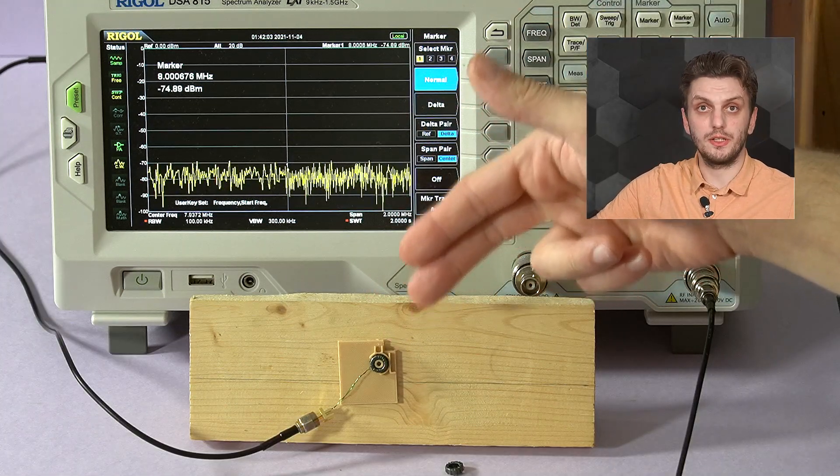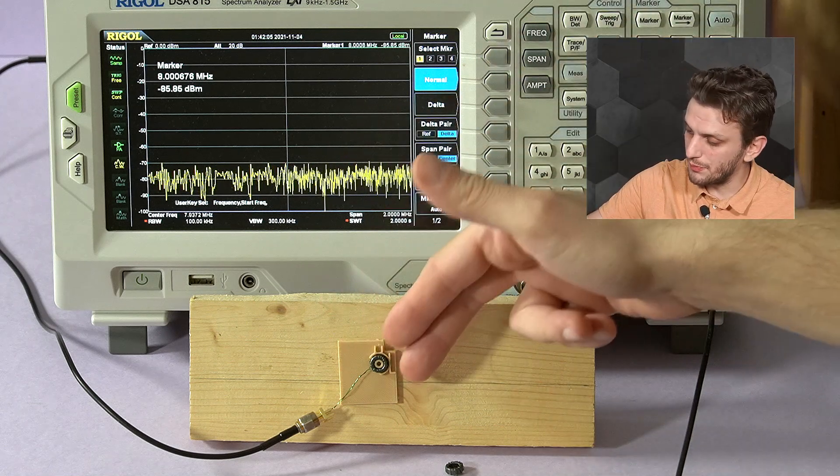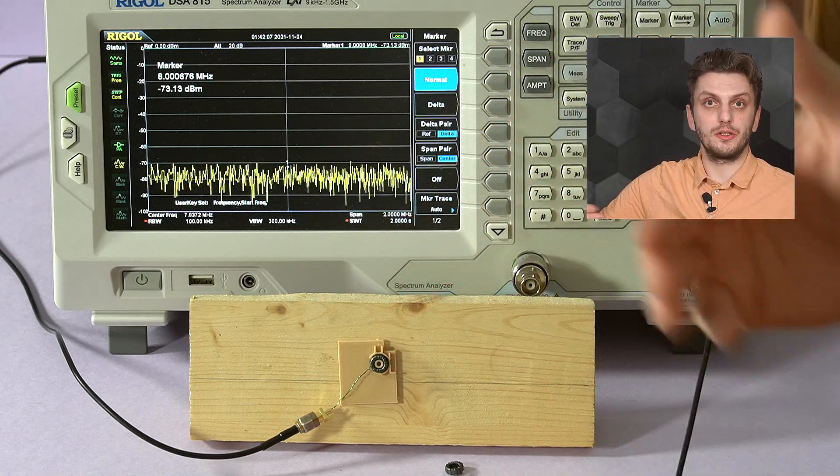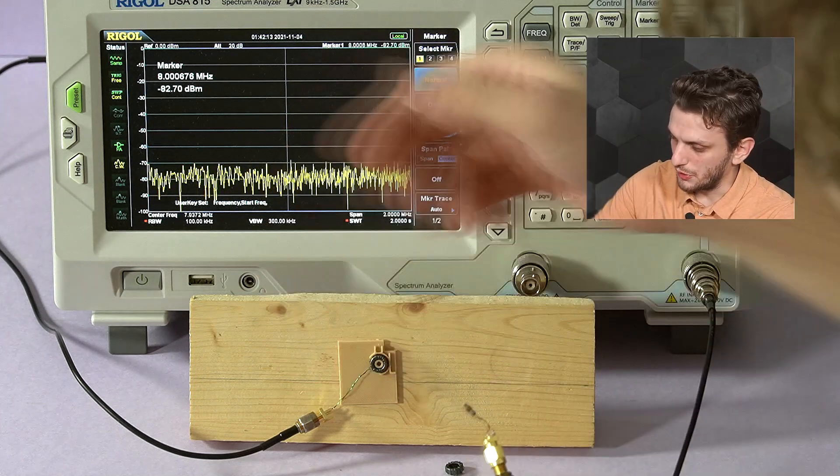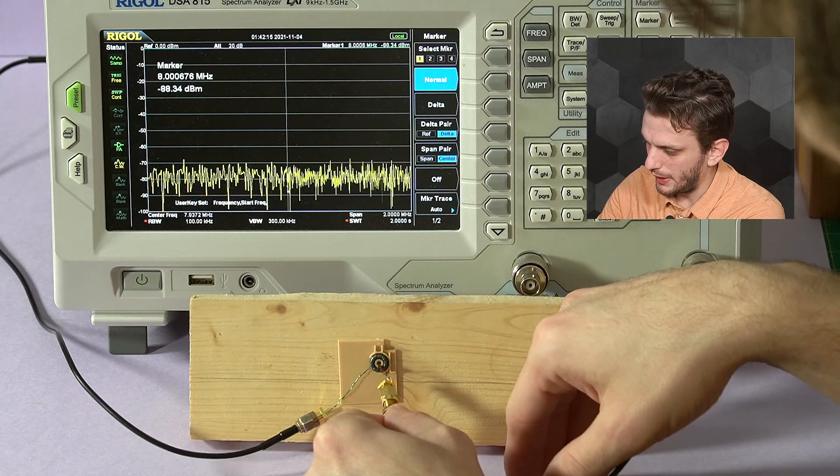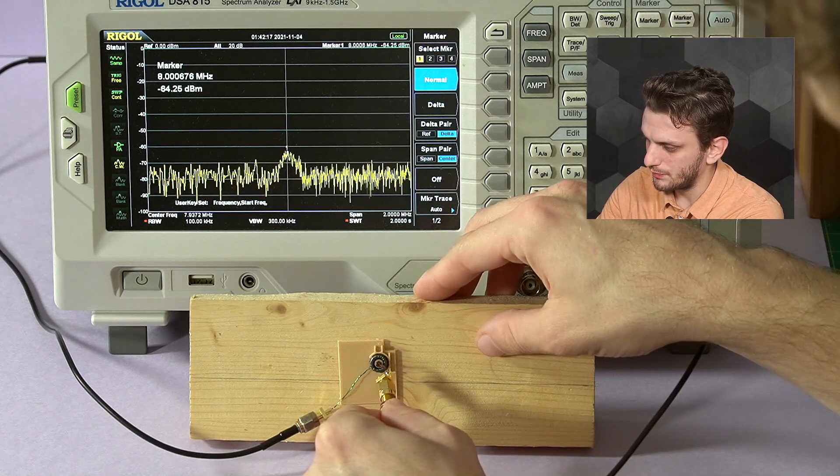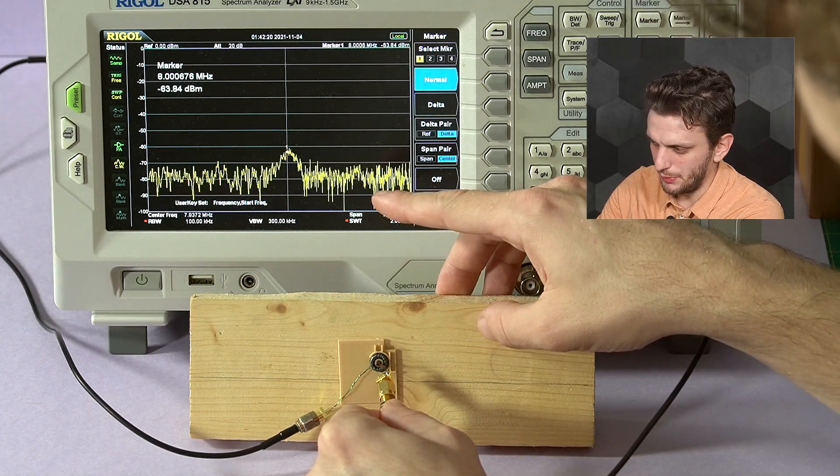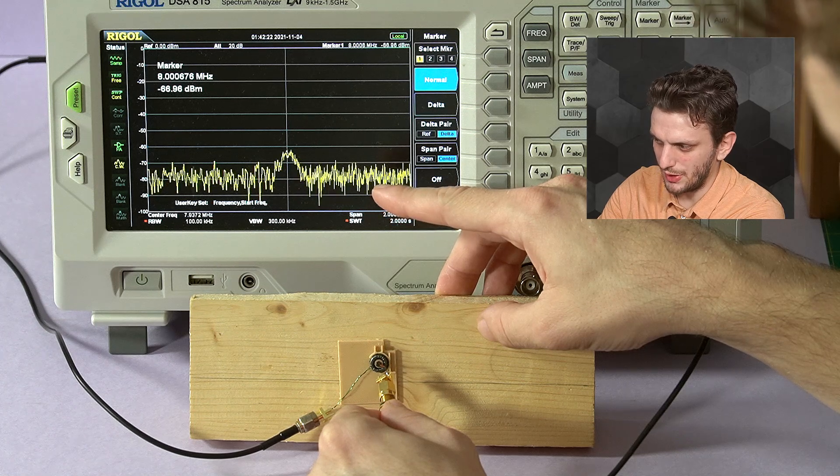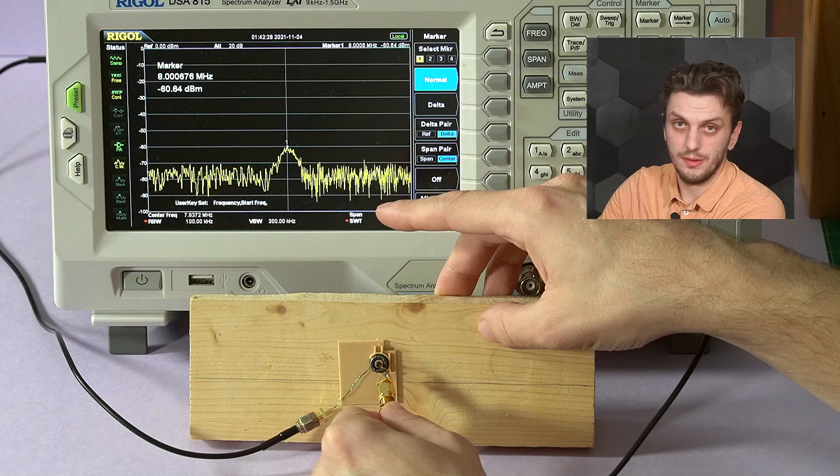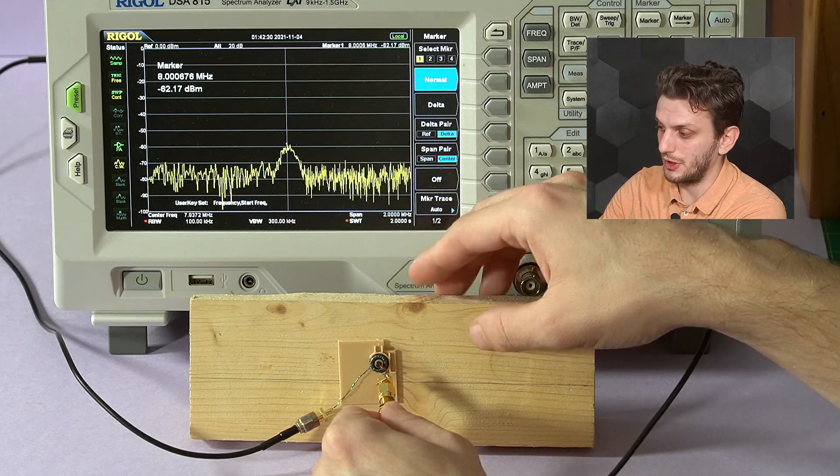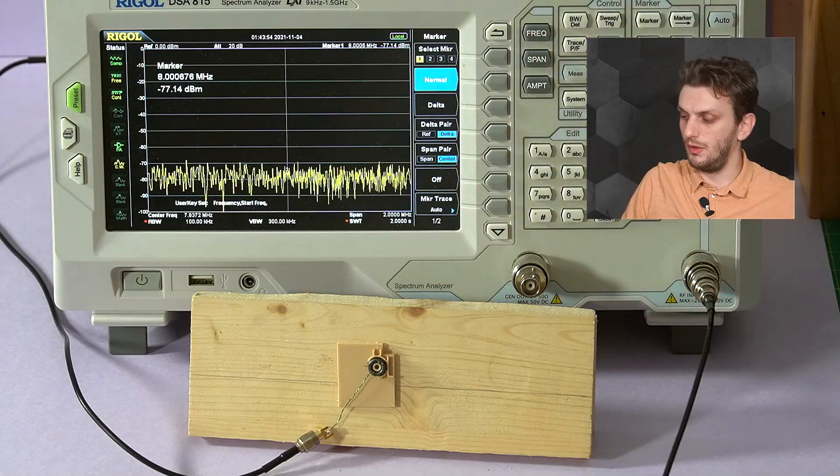Next, I have the inductor that has again the 15 turns but also has a return wire going beneath all of the turns. If we measure this thing, we still see a bit of a hump, but this time it's around minus 60 to 65 dBm. We got more than 10 dBm of field strength reduction by applying this measure.